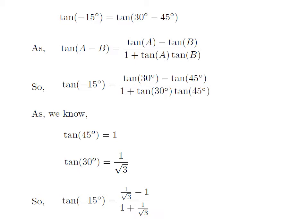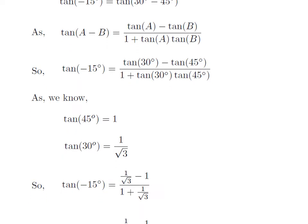So tangent of minus 15 degrees is equal to 1 upon square root of 3 minus 1 in the numerator, and in the denominator it is 1 plus 1 upon square root of 3 into 1, which becomes 1 plus 1 upon square root of 3.